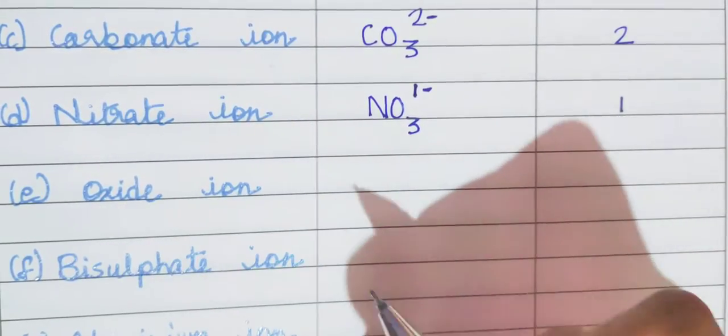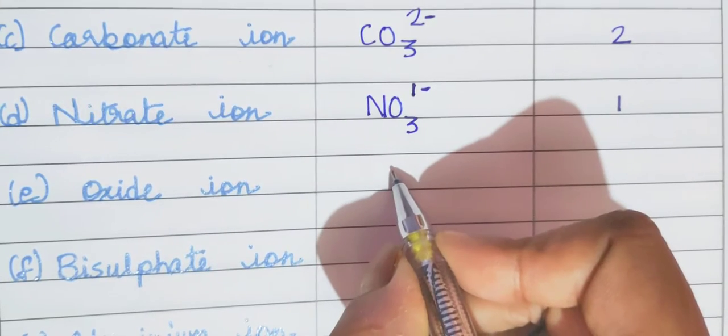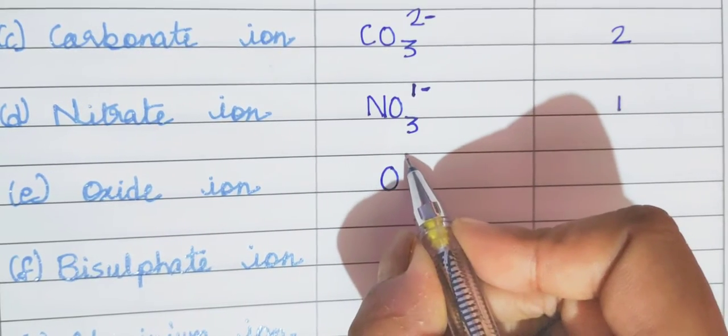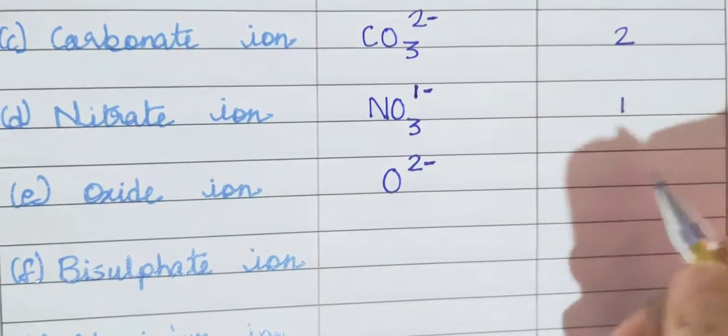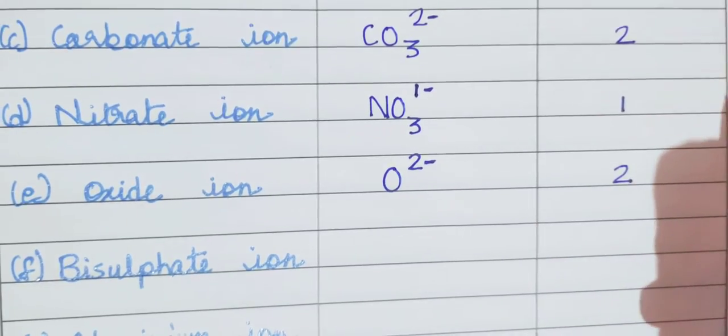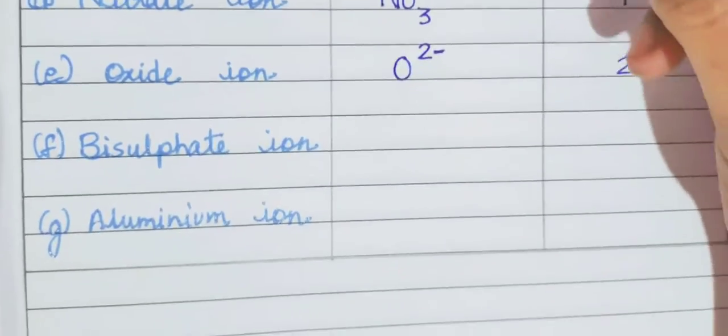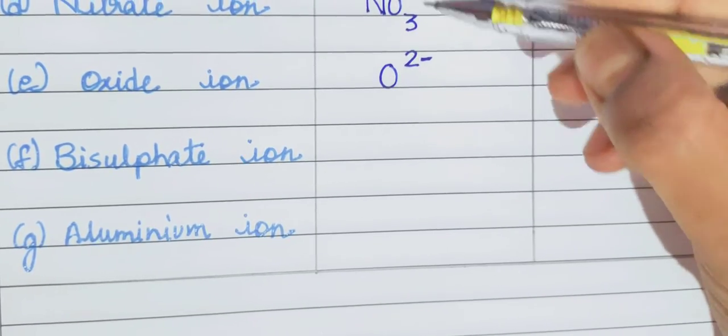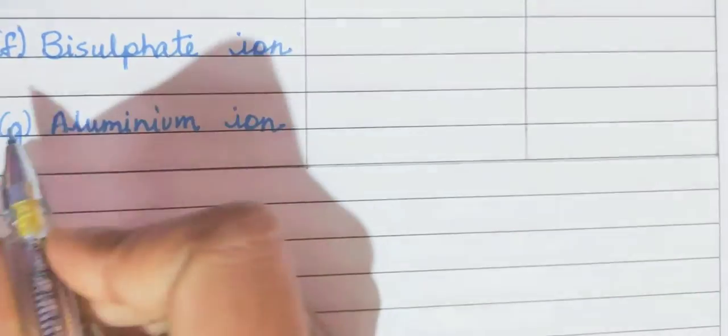So valency is 2 minus. So what is the valency? It is 2. Now if you observe, you can see here that I have written all the valencies as superscripts on the top right hand side.